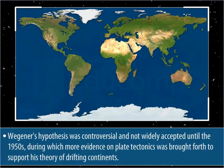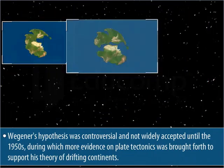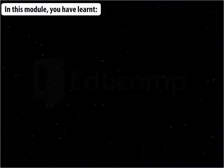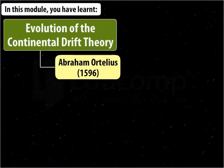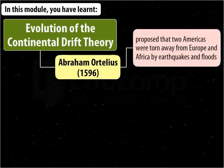Later, Laurasia and Gondwana Land broke down into various smaller continents that exist even today. Wegener's hypothesis was controversial and not widely accepted until the 1950s, during which more evidence on plate tectonics was brought forth to support his theory of drifting continents.